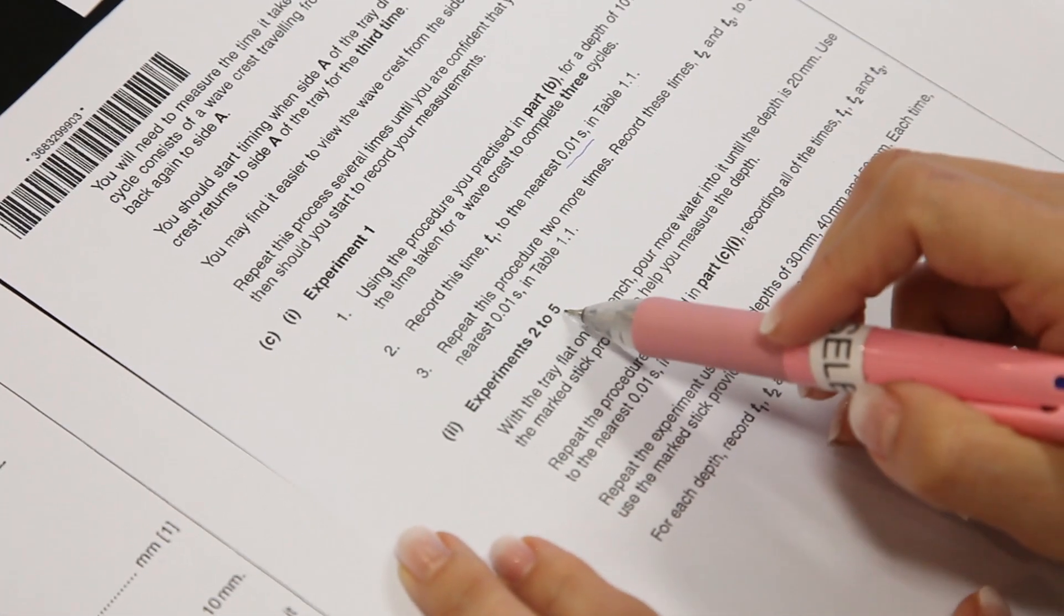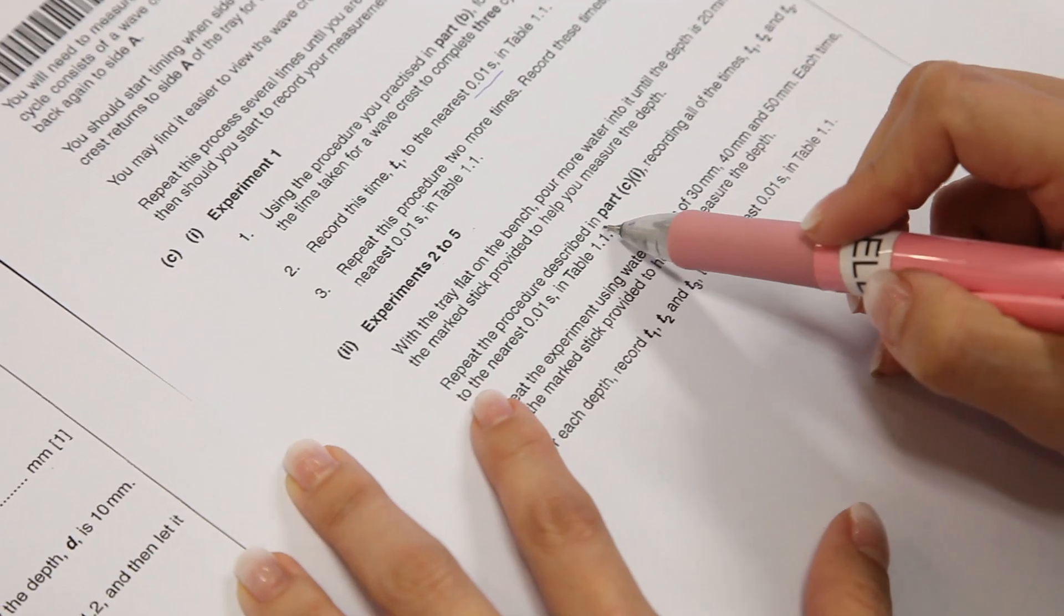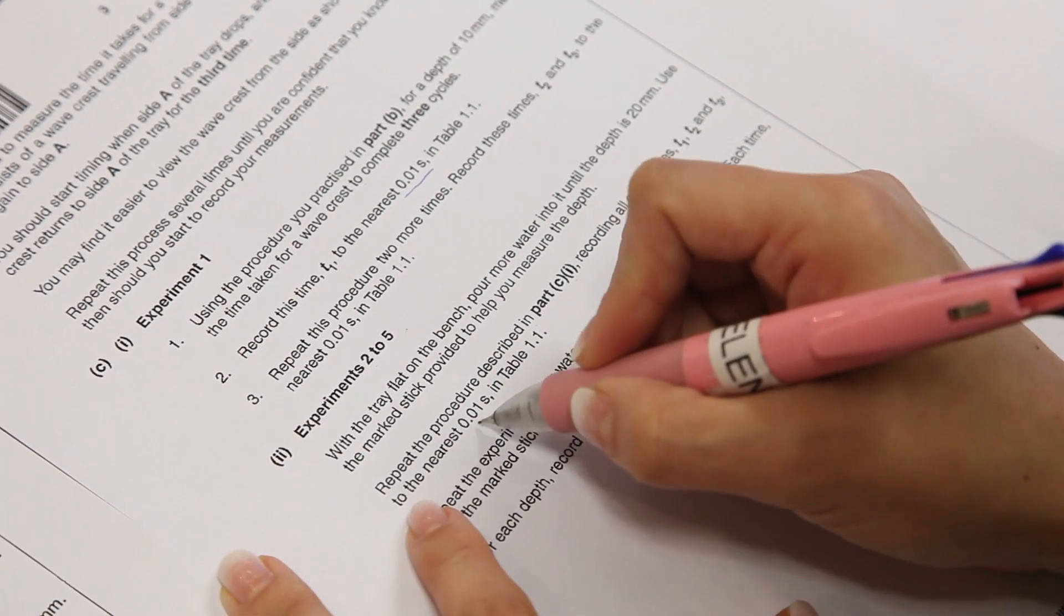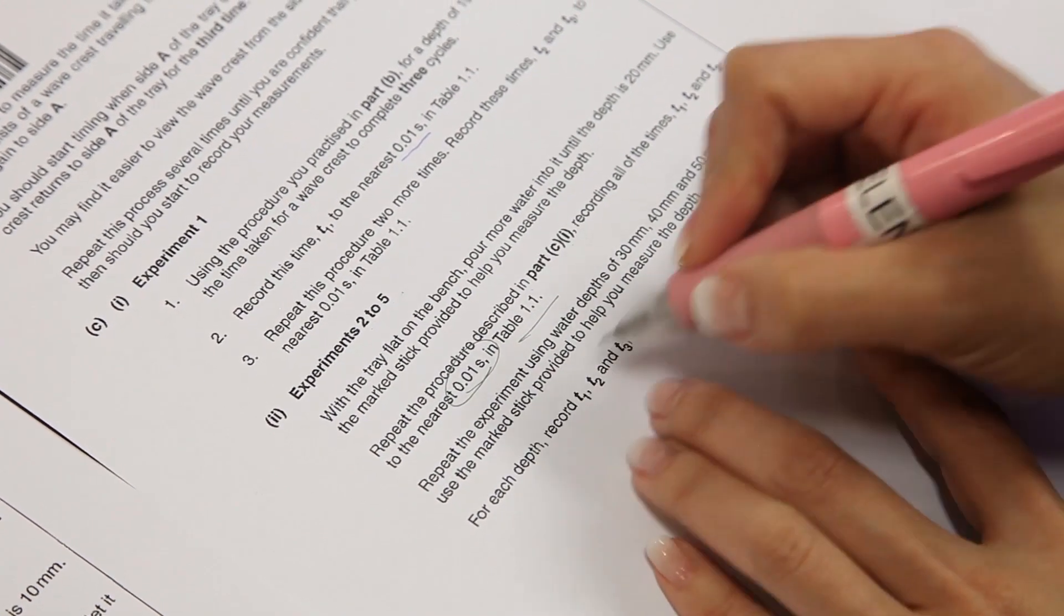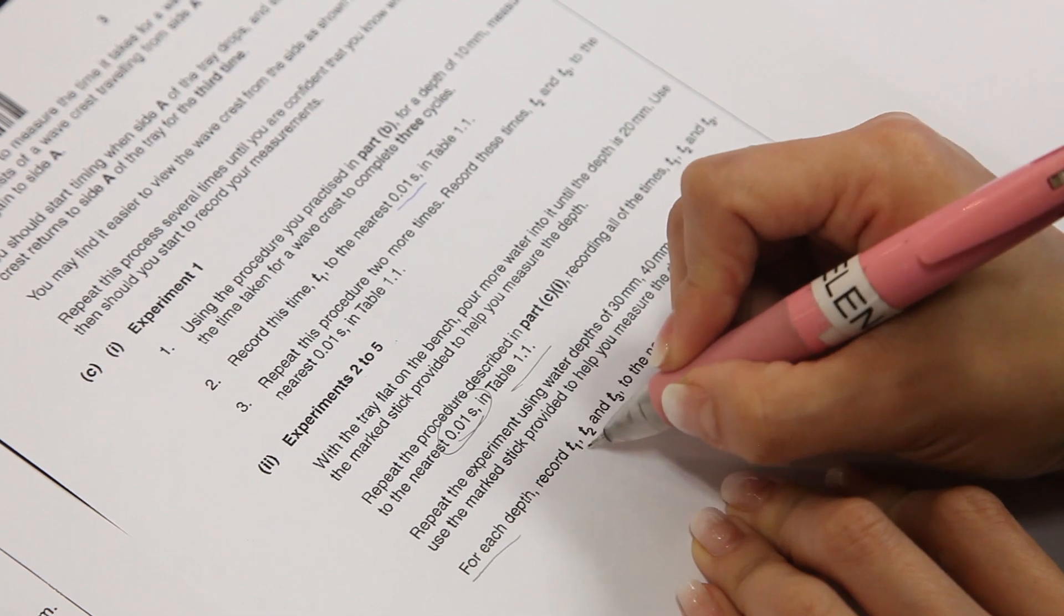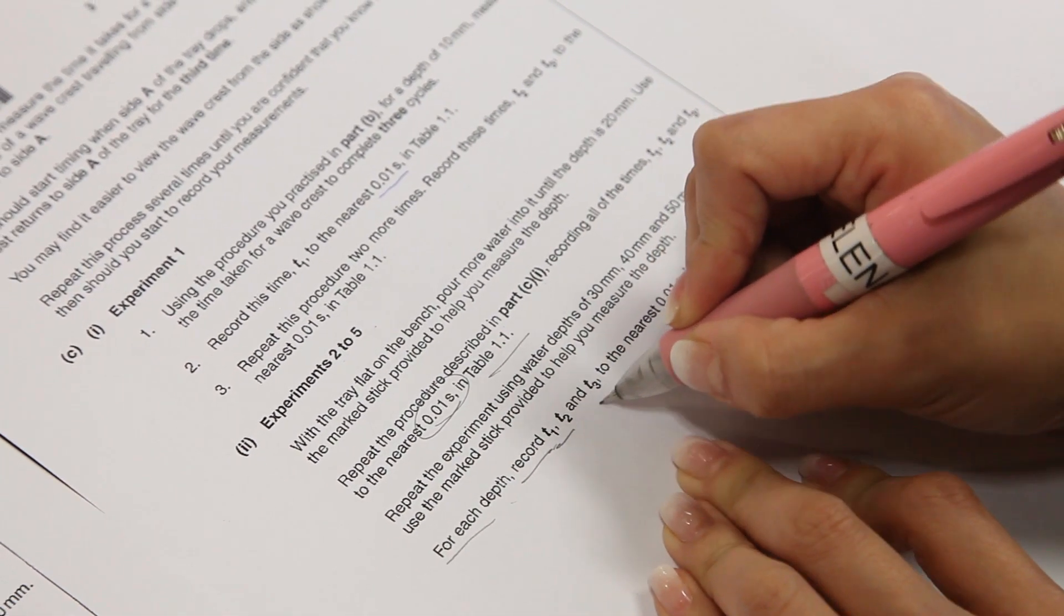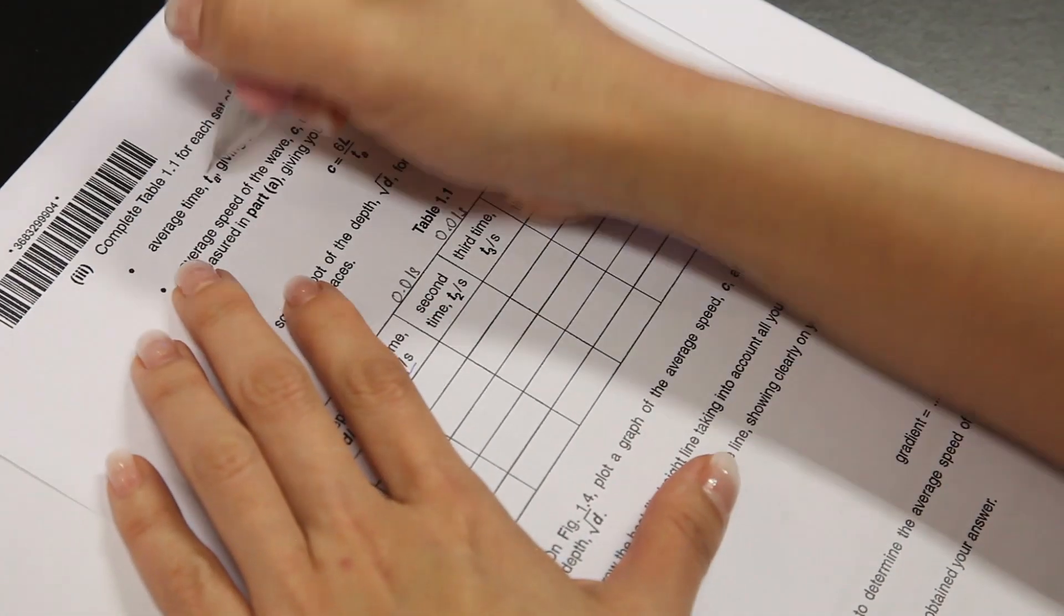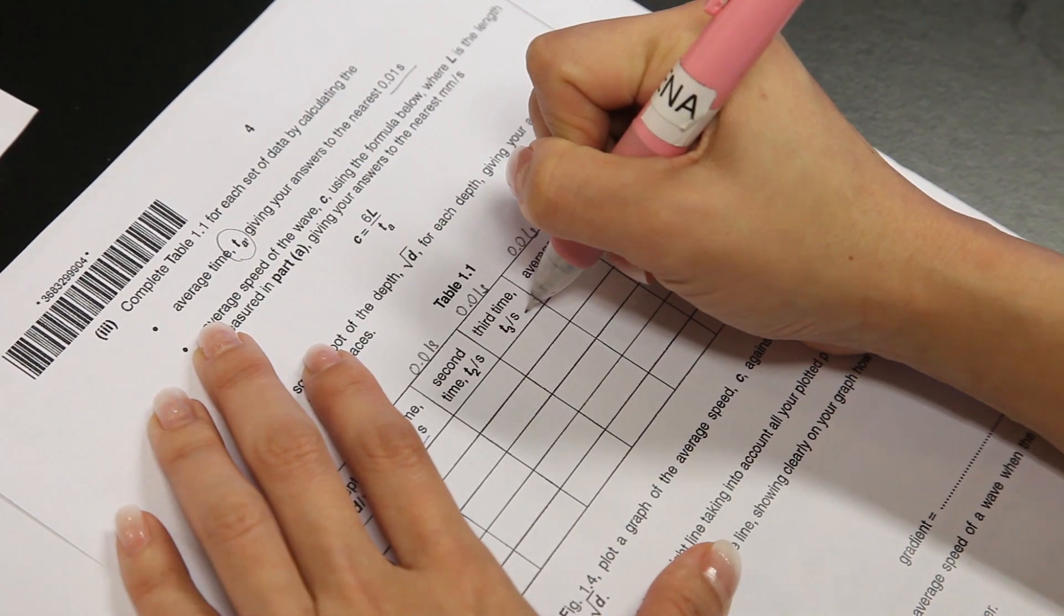Experiment 2 to 5 here says, repeat the procedure described. Record all the timing T1, T2 and T3 to the nearest 0.01 seconds. And record each depth. For each depth, record T1, T2 and T3 to the nearest 0.01 seconds. This portion here, the average time TA, giving your answer to the nearest 0.01 seconds.